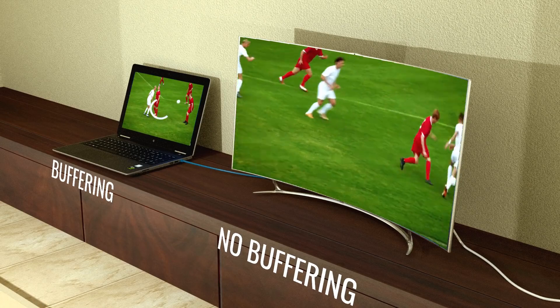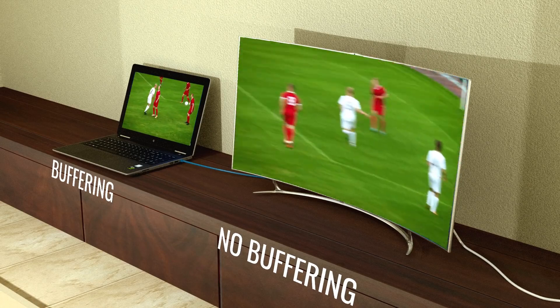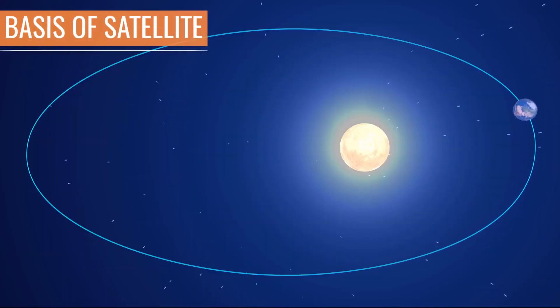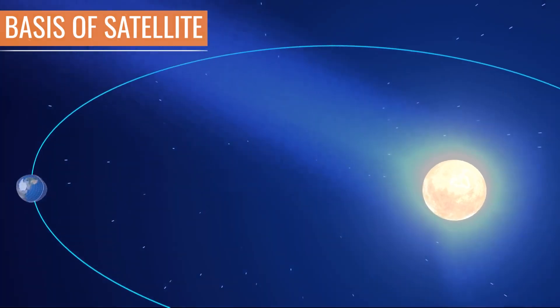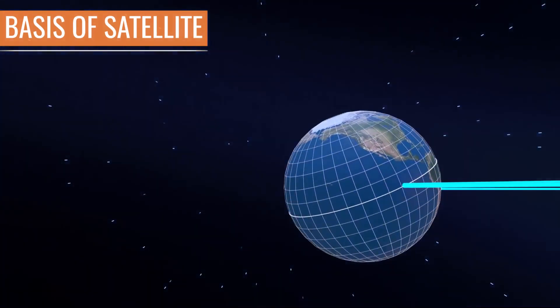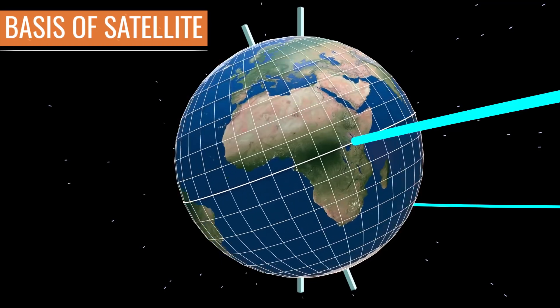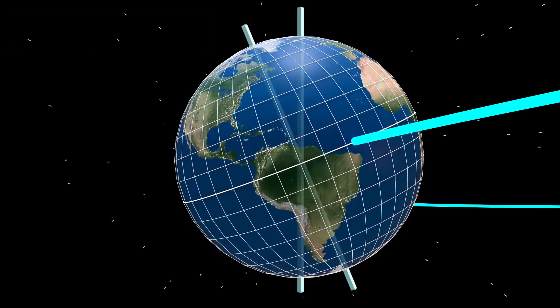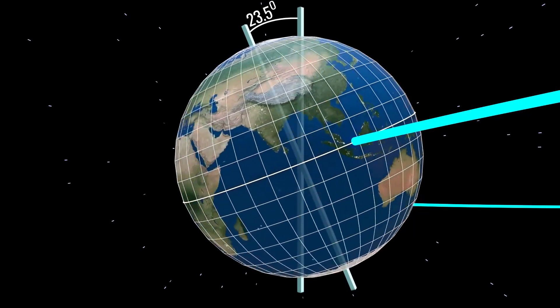To understand satellite TV broadcasting properly, we first need to have some basic knowledge about the parts of a satellite and how a satellite moves. As you can see, the Earth revolves around the Sun in an elliptical orbit, and the Earth also turns on its own axis. You can see that this axis of rotation is not perpendicular to the elliptical orbit surface, but slightly inclined as shown.